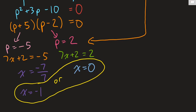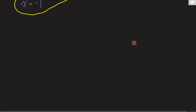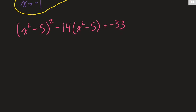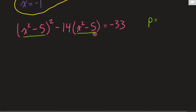Okay, one more example. This one's going to look a little bit scary because it's got quadratics in it, but I think you might even be able to do it on your own. If you're feeling confident, pause the video and try it yourself. The idea with this one is we've got a quadratic binomial — x² - 5 — that appears in both terms. So let's replace both of those with p.